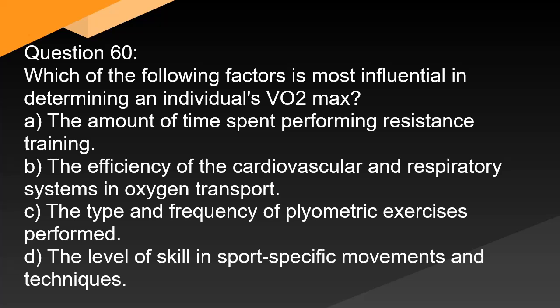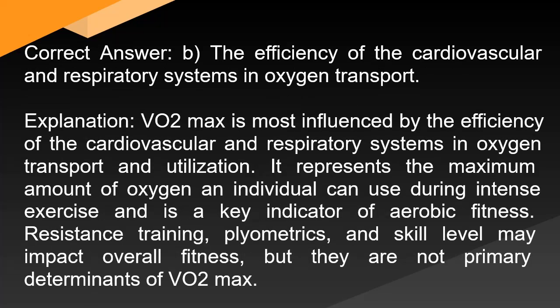Question 60: Which of the following factors is most influential in determining an individual's VO2max? A. The amount of time spent performing resistance training. B. The efficiency of the cardiovascular and respiratory systems in oxygen transport. C. The type and frequency of plyometric exercises performed. D. The level of skill in sport-specific movements and techniques. Correct answer: B. VO2max is most influenced by the efficiency of the cardiovascular and respiratory systems in oxygen transport and utilization. It represents the maximum amount of oxygen an individual can use during intense exercise and is a key indicator of aerobic fitness. Resistance training, plyometrics, and skill level may impact overall fitness, but they are not primary determinants of VO2max.